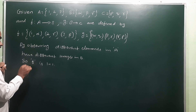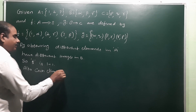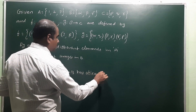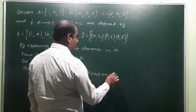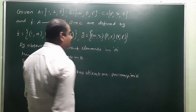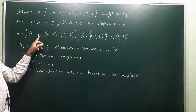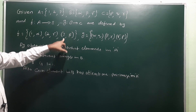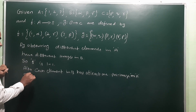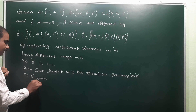Also, each element in B has at least one preimage in A. The preimage of alpha is 1, preimage of gamma is 2, preimage of beta is 3. So f is onto. Since f is one-one and onto, clearly f is a bijection.